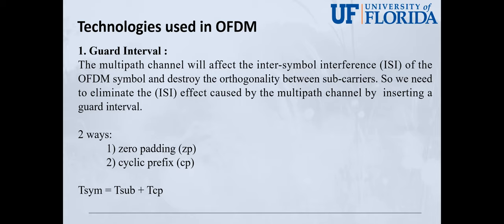We can use the formula listed here to get the length of each symbol. The T sub here is the number of subcarriers in the data part. If TCP is greater than or equal to the multi-path delay, the ISI influence between symbols will be limited within the guard interval, so it will not affect the FFT transformation of the next OFDM.